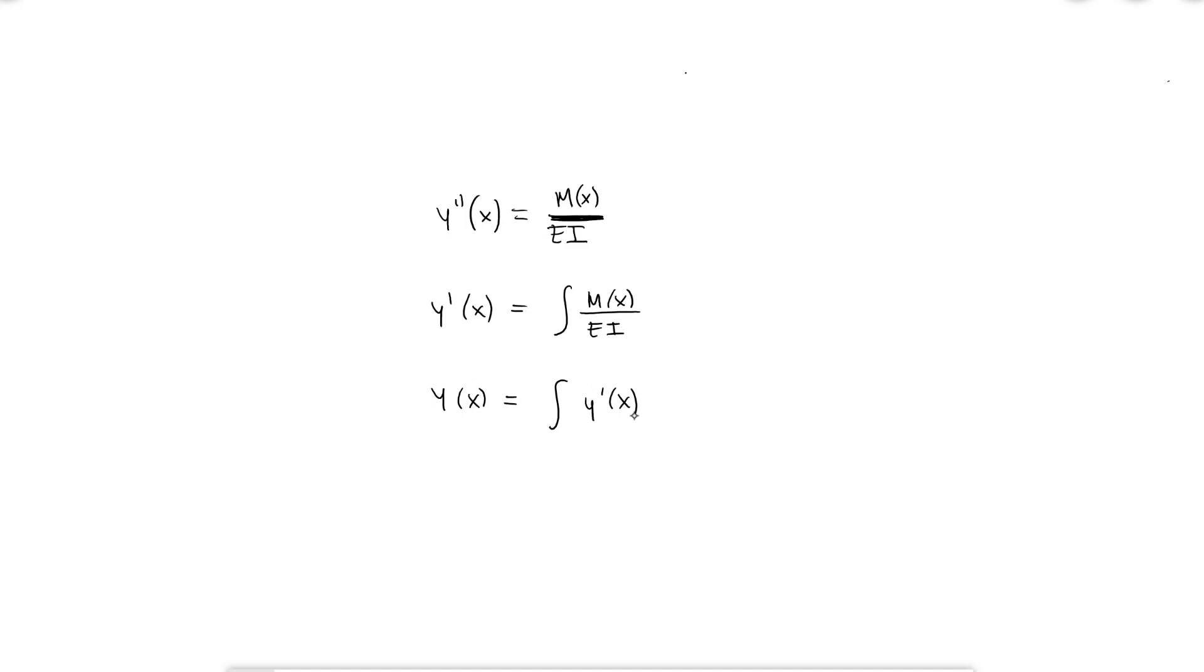In other words, if I find the moment as a function of x, I can integrate M over EI to find the slope at any point along the beam, and the deflection at any point along the beam.